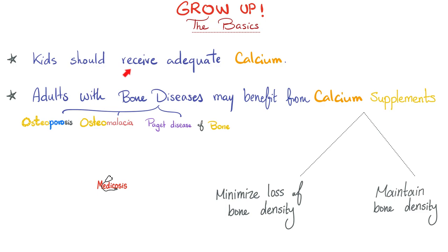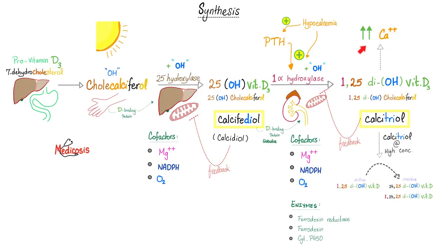As infants grow up, they require adequate calcium — but not just for the young; even elderly people with certain diseases may benefit from calcium supplements. Your bone contains calcium, and recall the story of calcium and vitamin D: you need sunlight, your skin, liver, gut, and kidneys to produce the active form of vitamin D, which will raise calcium in the blood.